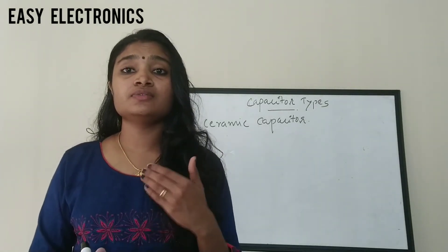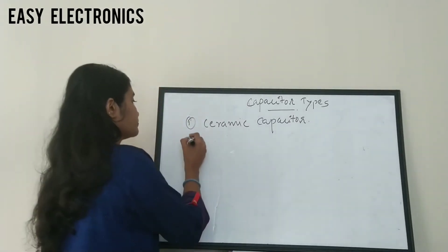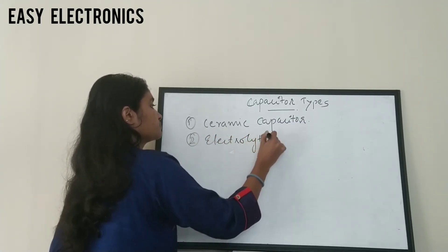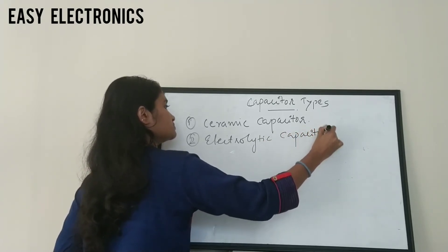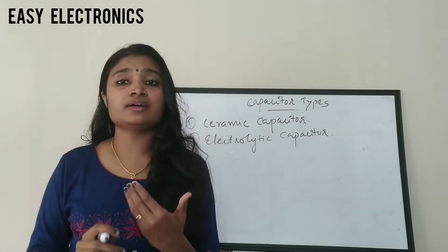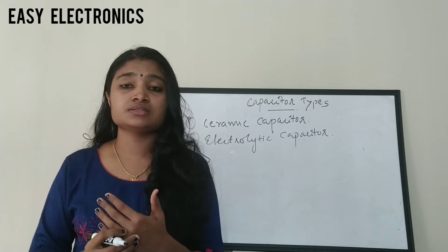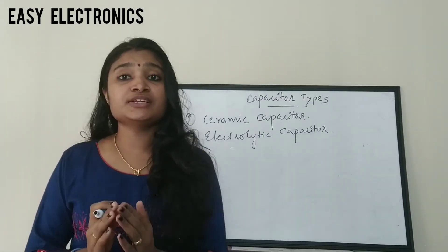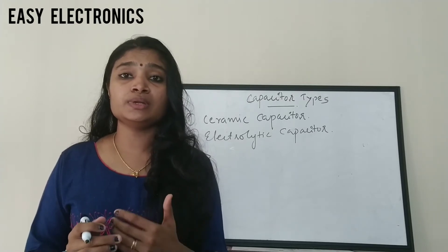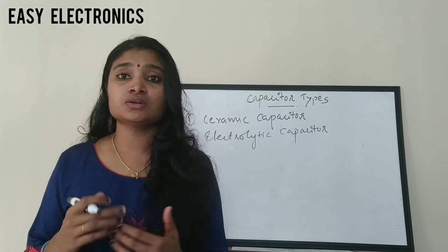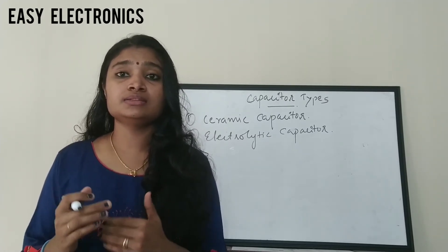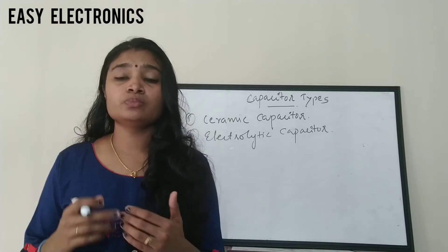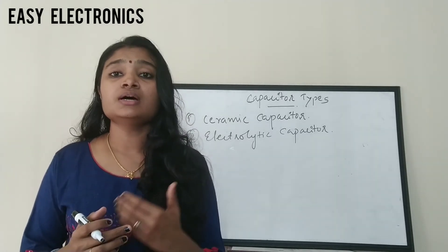The next type is the electrolytic capacitor. Electrolytic capacitors have capacitance values greater than ceramic capacitors — greater than 1 microfarad. This capacitor is made using two thin aluminum foils, one of which is covered with a thin oxide coating. An electrolytic soaked paper is kept between the two aluminum films, and the foils are wound together to form the electrolytic capacitor.